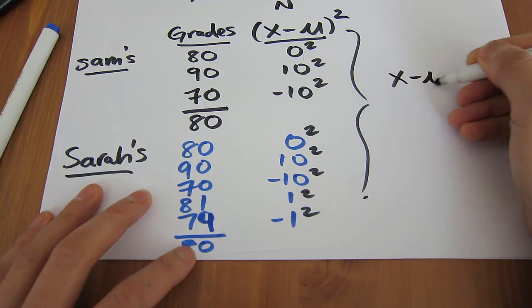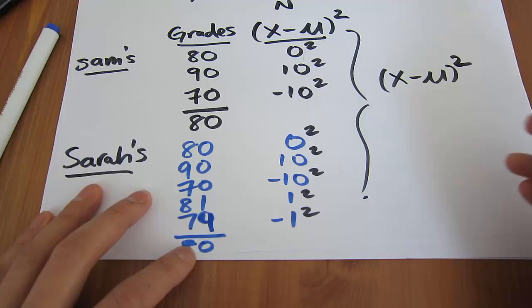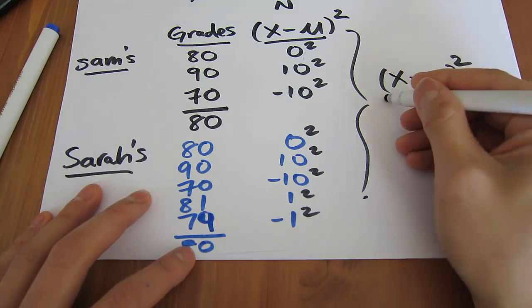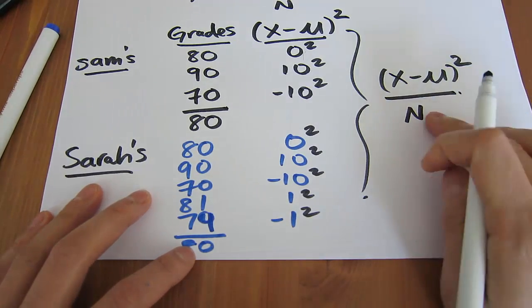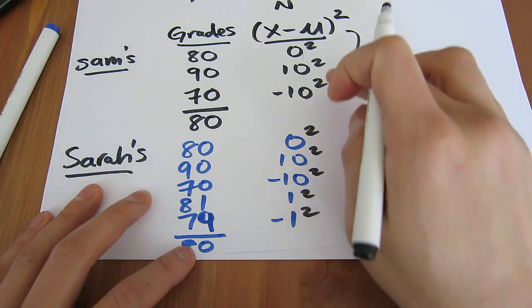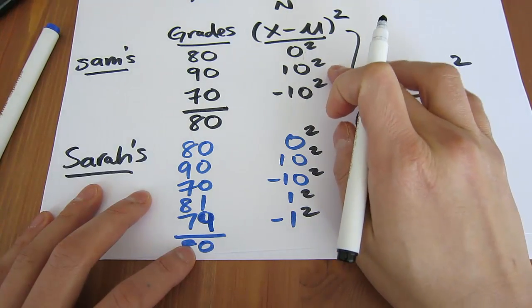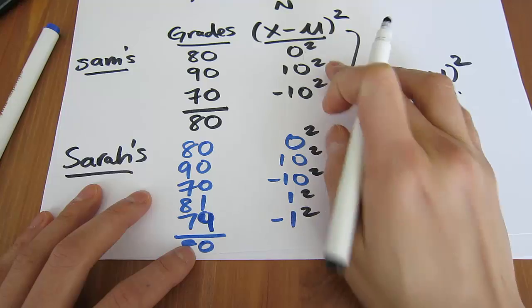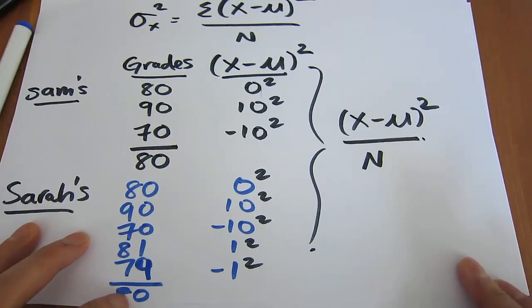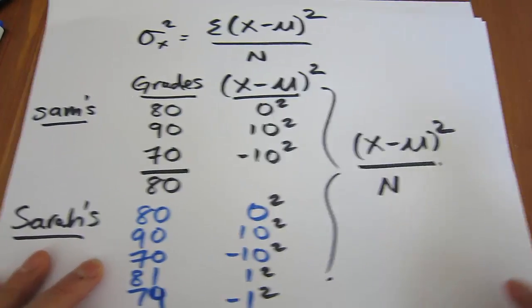So we've taken each observation minus the mean. We had to square them so negative and positive deviations don't cancel each other out. And we had to take the average because we have to recognize the fact that one population here has less observations than another population here. And that is the variance formula.